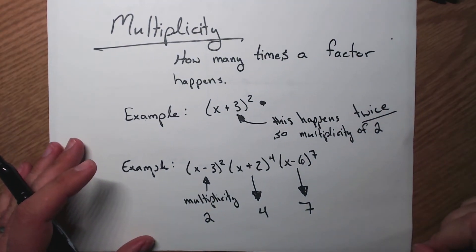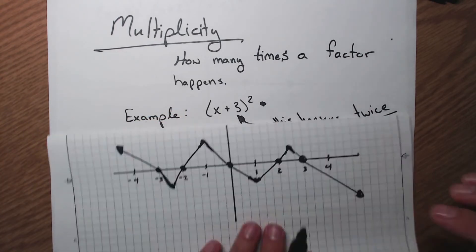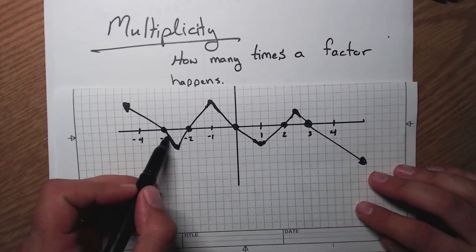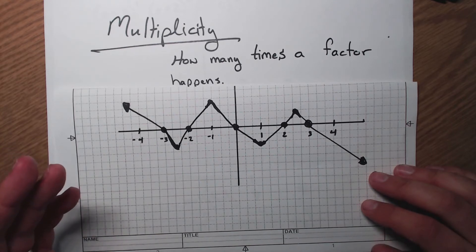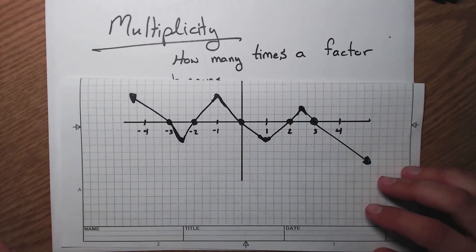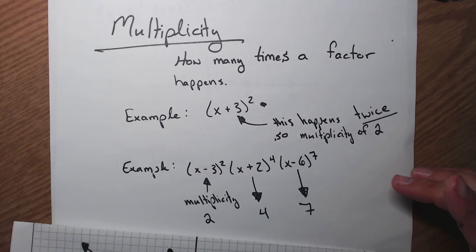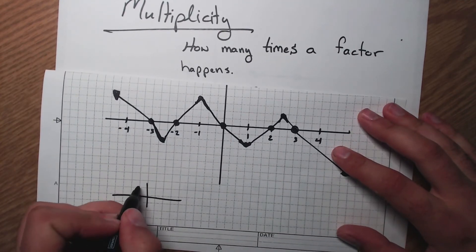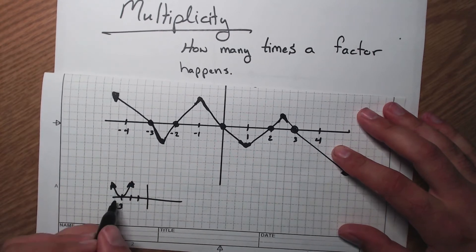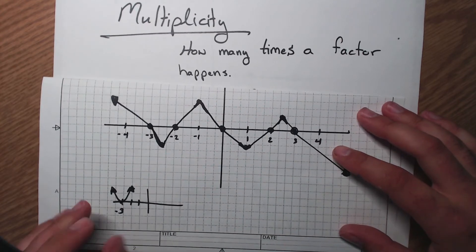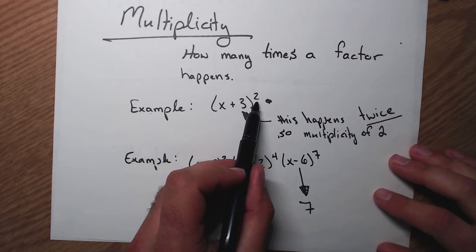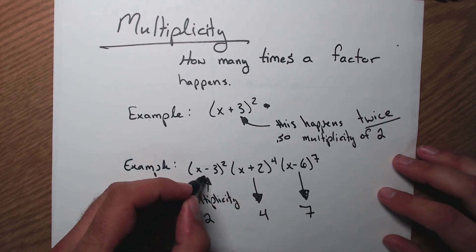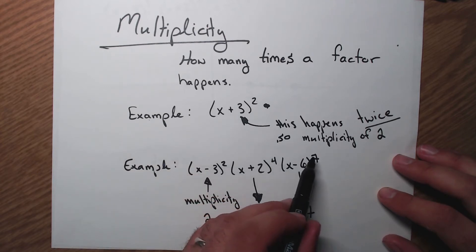Multiplicity is how many times a factor occurs. If I pass through a point, it has an odd multiplicity. If it has an even multiplicity — like a parabola — I hit the x-axis and bounce right off. In this example, the first chunk has a multiplicity of 2, the next has a multiplicity of 4, and the last has a multiplicity of 7.